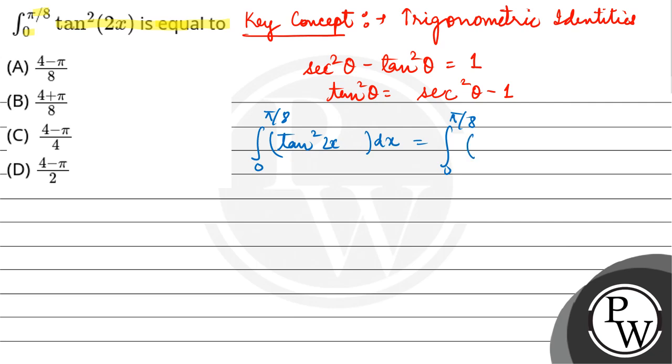It's tan square 2x, not minus 1. Tan square 2x. So it can be written as secant square 2x minus 1 dx.